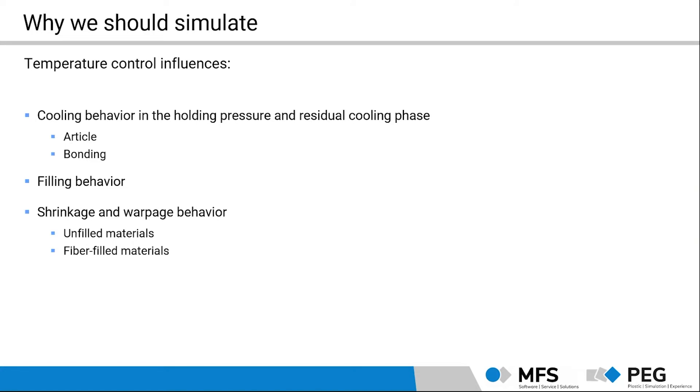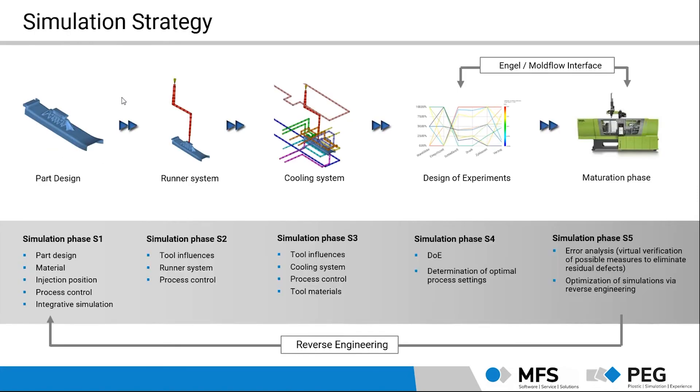Let's have a closer look at the simulation strategy we are preferring. Typically, we start with a part design in the first simulation phase. After that was done, we switch to the second phase where we include the tool influences like the runner system. But then in phase three, of course, the cooling system. That is our main part. And that is what we are focused on in this training in more detail.